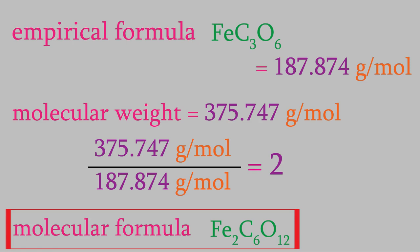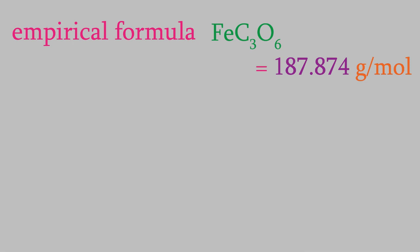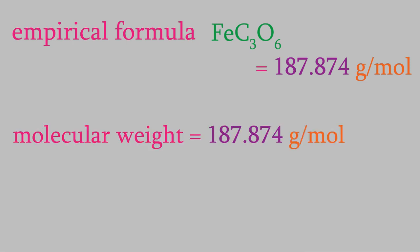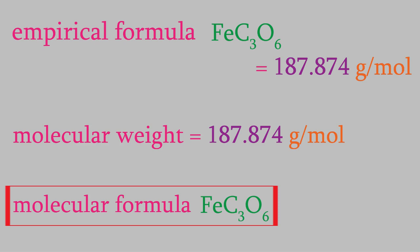One thing to notice is that it's quite possible for the molecular formula to be the same as the empirical formula. For example, suppose the molecular weight had been 187.874 grams per mole in that last problem. In that case, it would have been the same as the mass of the empirical formula. So, the molecular formula would also have been FeC3O6.